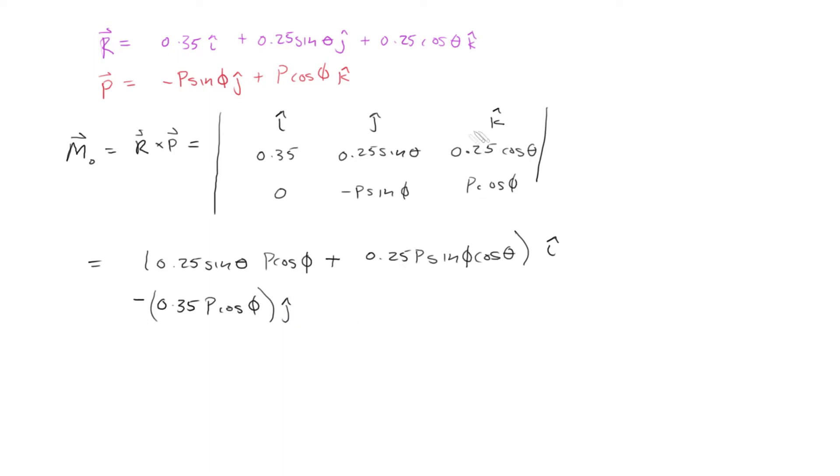Then we're going to do the k component. So this is going to cover up the k component. You do 0.35 times this, minus that. So that simply becomes plus 0.35 P sine phi.